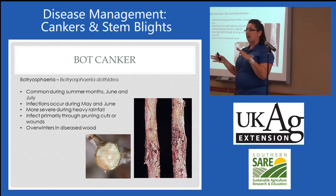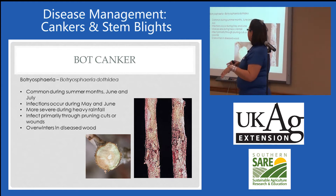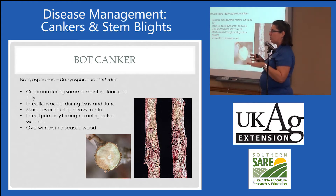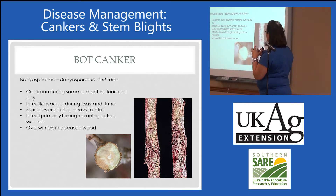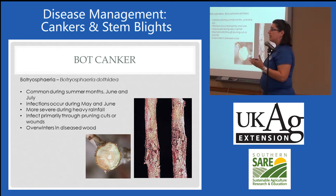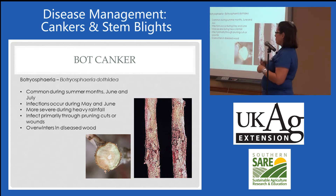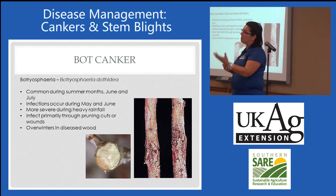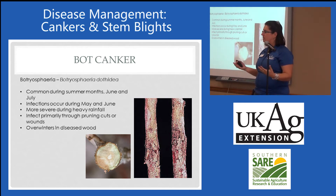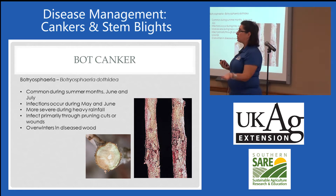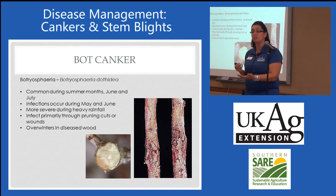I talked about infection time versus symptom development. We usually see signs of bot canker mid to late summer when it's hot and the plant has higher water requirements. But infection is actually occurring right at leaf out and bloom — infections are occurring in May. In rainy years like this year, we'll see a lot more of it, or infection may have occurred this year and you may not see symptoms until next year.